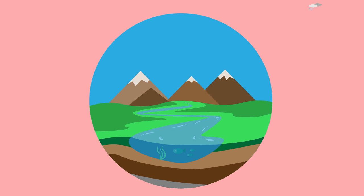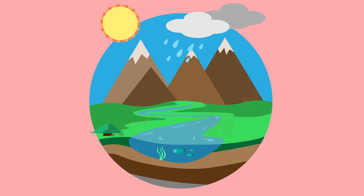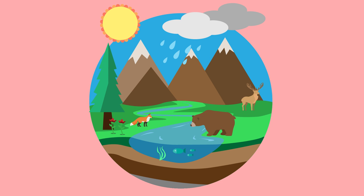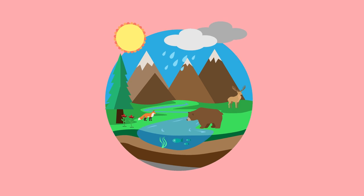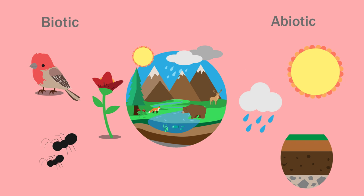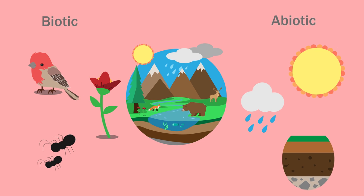Ecosystems are large, often highly complex areas of our environment. In today's video, we will be discussing some of this complexity as it relates to how different aspects of an ecosystem interact with one another. As we discussed in a previous video on ecosystem components, ecosystems are composed of both biotic or living and abiotic or non-living components. Let's start by discussing the abiotic parts of an ecosystem.